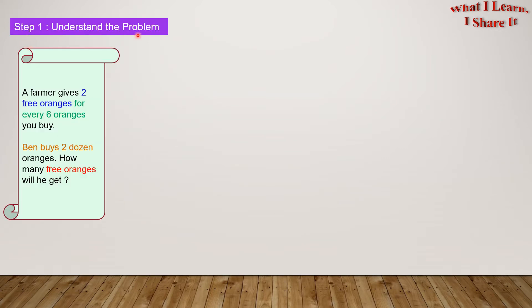Step 1. Understand the problem. So what is given to us? We are given that a farmer gives 2 free oranges for every 6 oranges you buy. So in our own words we can write, When someone buys 6 oranges, the farmer gives 2 extra oranges.